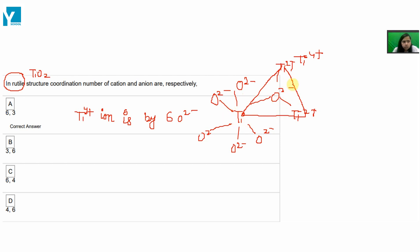So the coordination number, Ti positive is around 6 O2 negative. So this is 6 and O2 negative is 3.